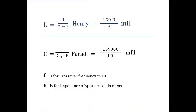These equations are used to find the values of the inductor L and the capacitor C. Here F is for crossover frequency in Hertz and R is for the resistance of the speaker coil.